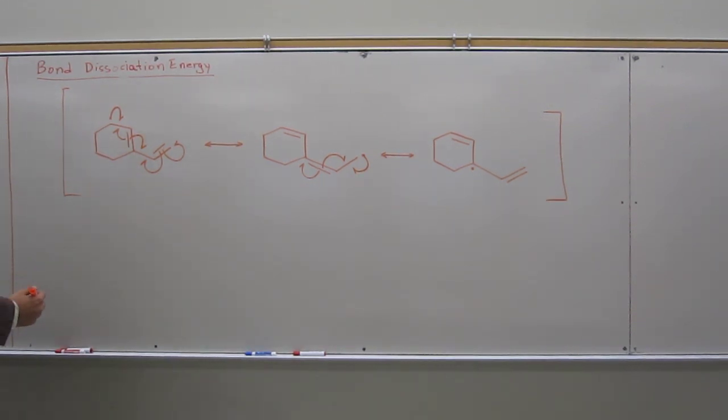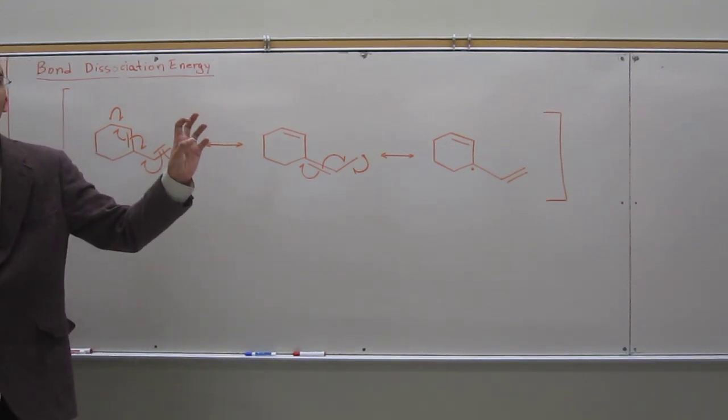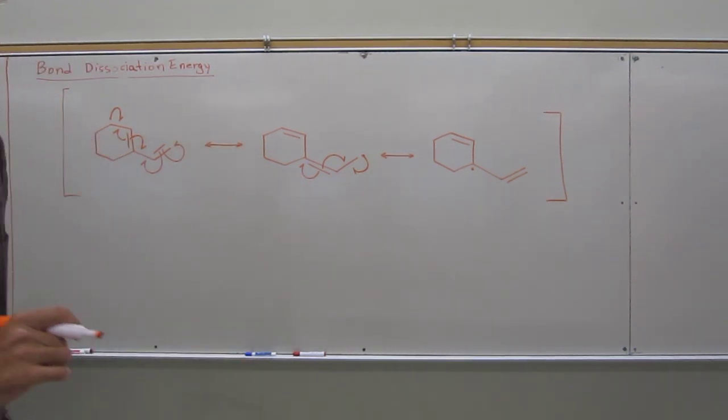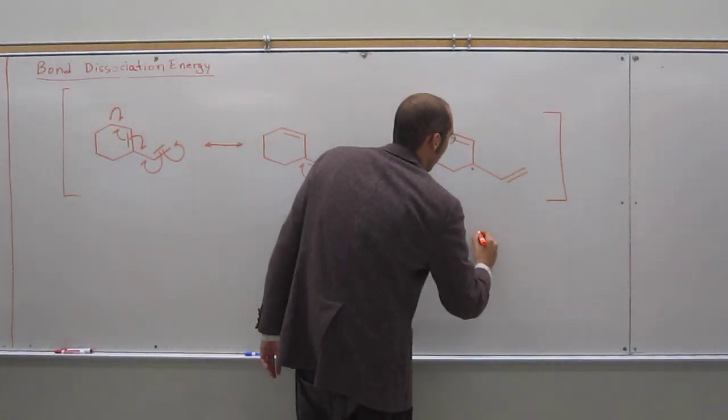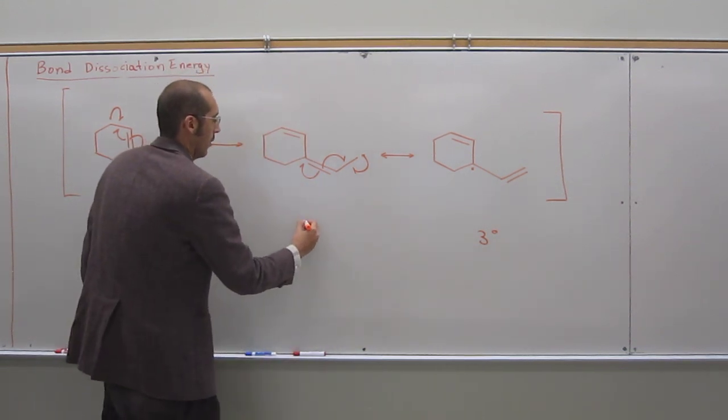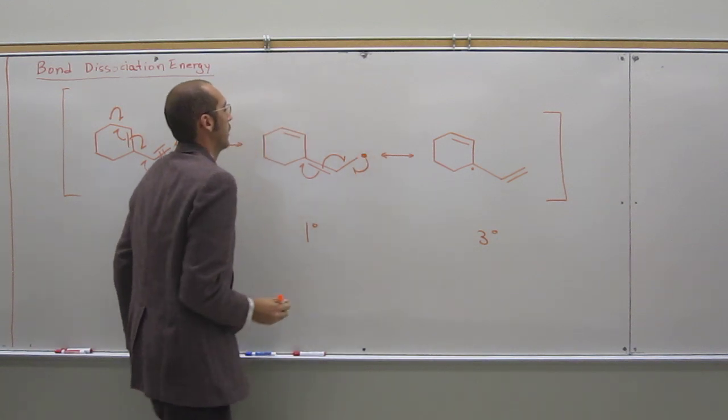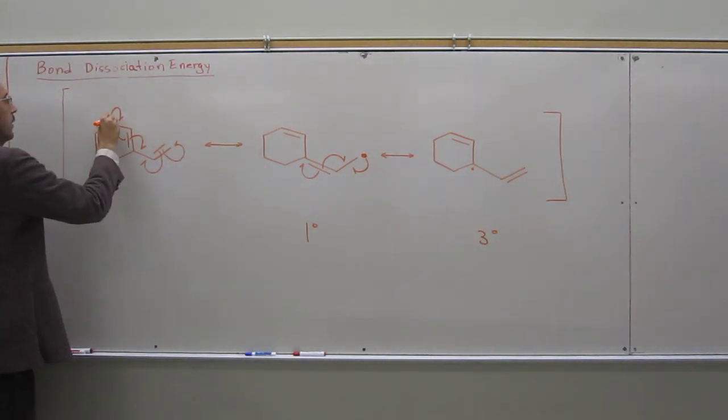So, yeah, which one of these would be the most favored resonance structure is the best way to say it, right? The last one. The very furthest here. Why? Because that's the tertiary. This one here is the what? Primary. I know it's hard to see now, but the radical's there. And this one here was the secondary.